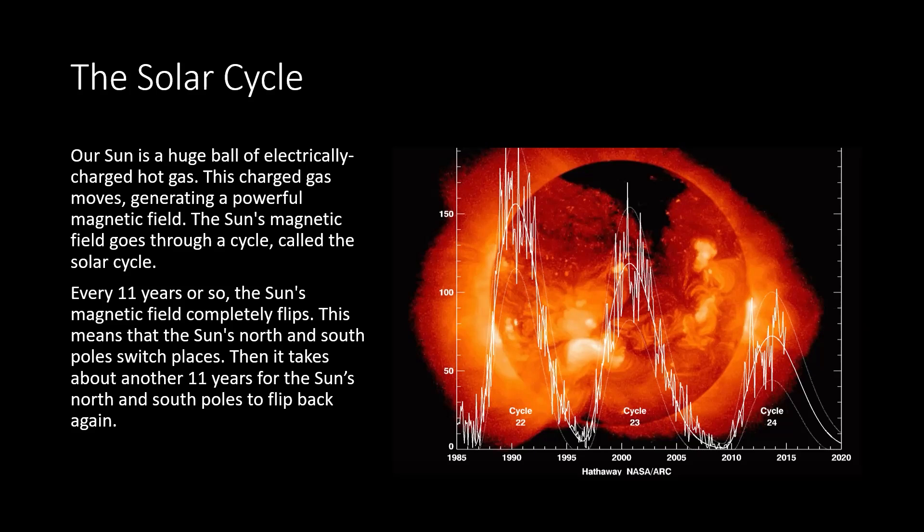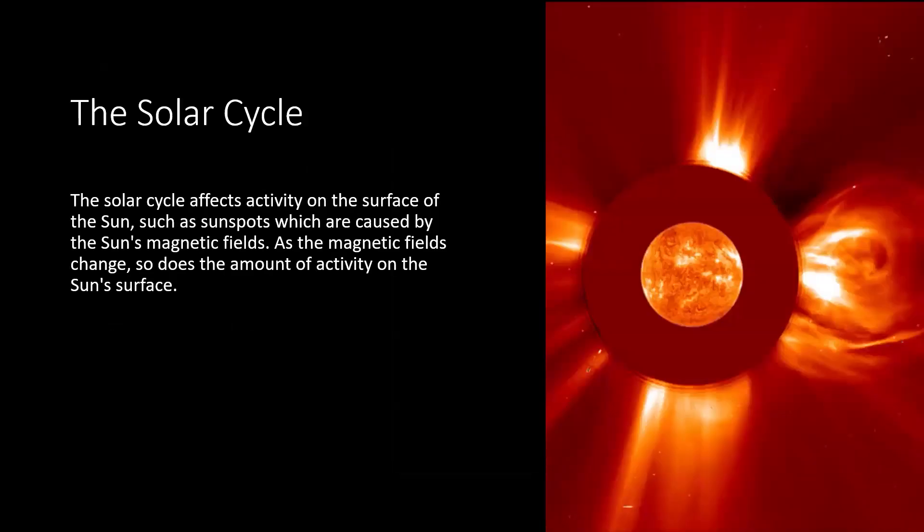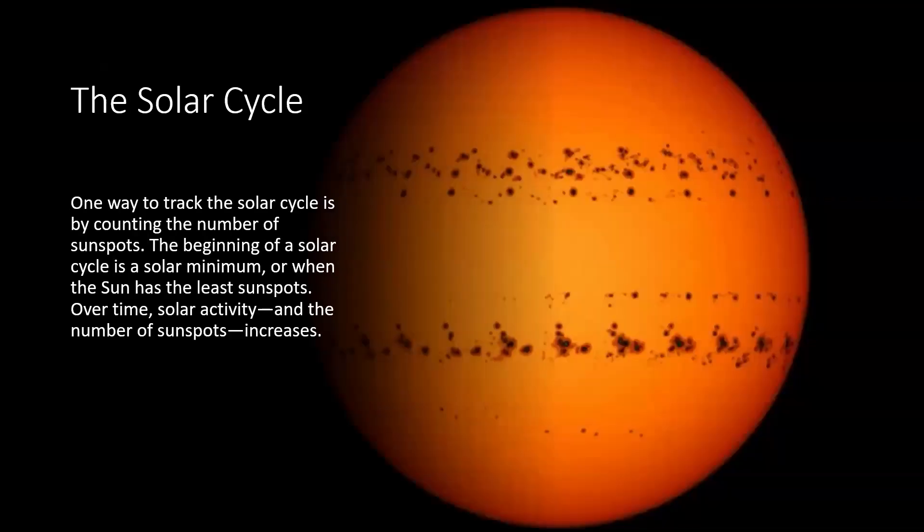Flipping back again is another reason why we have solar flares and sunspots. The solar cycle affects activity on the surface of the sun, such as sunspots which are caused by sun's magnetic field. As the magnetic fields change, so does the amount of activity on the sun's surface. One way to track the solar cycle is by counting the number of sunspots. The beginning of a solar cycle is a solar minimum, or when the sun has the least sunspots. Over time, solar activity and the number of sunspots increases. We'll go up to a maximum, poles will flip, then go down to a minimum, and again poles will flip.